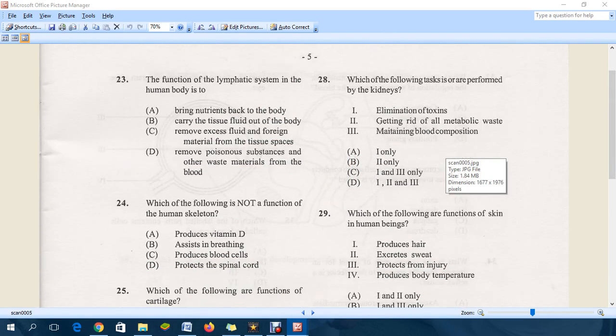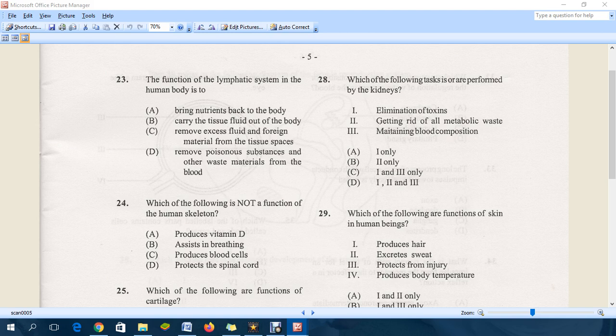Question 28: which of the following tasks is performed by the kidneys? Let's look and see which combination. C seems to be the correct answer, where you have elimination of toxins and then you also have maintain blood composition. That is the correct answer.